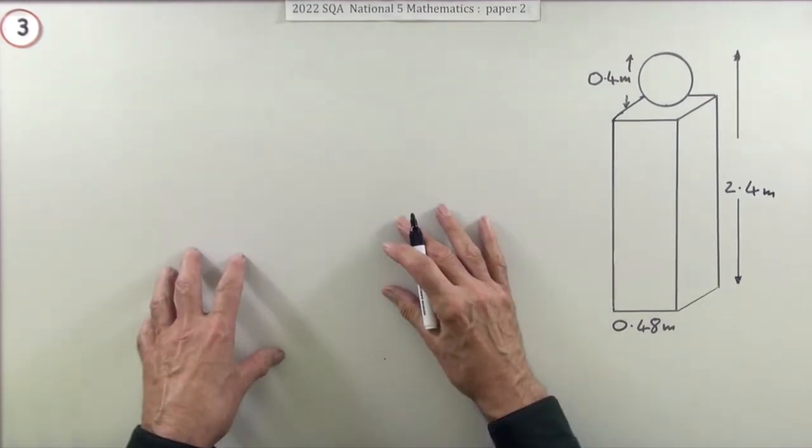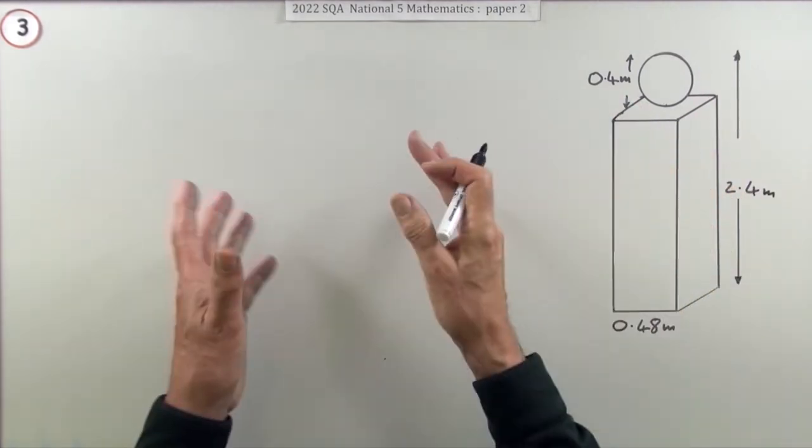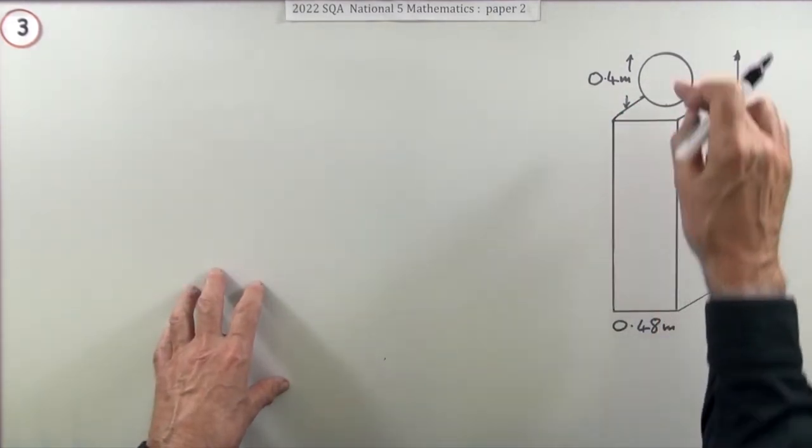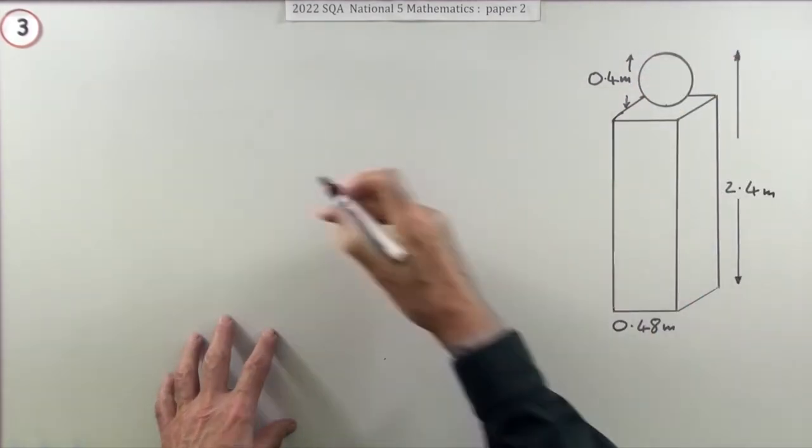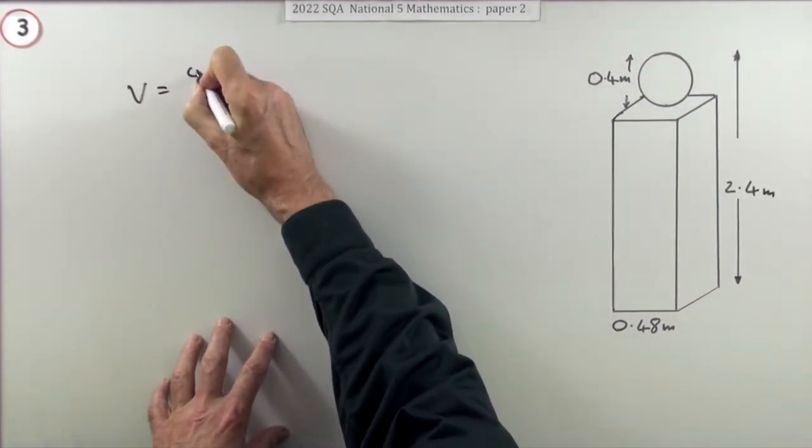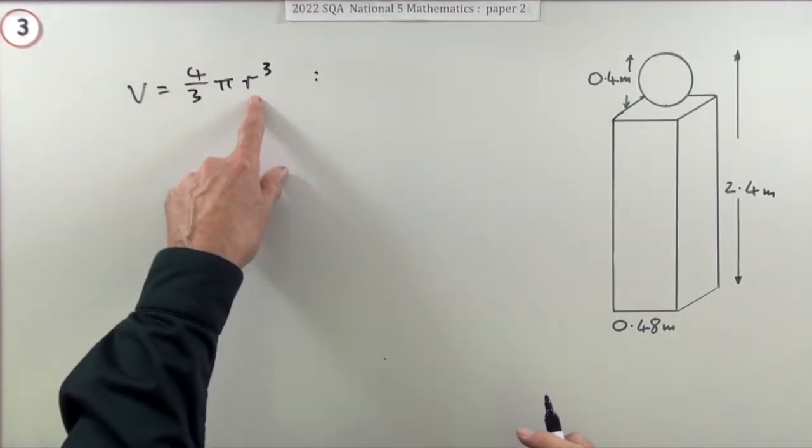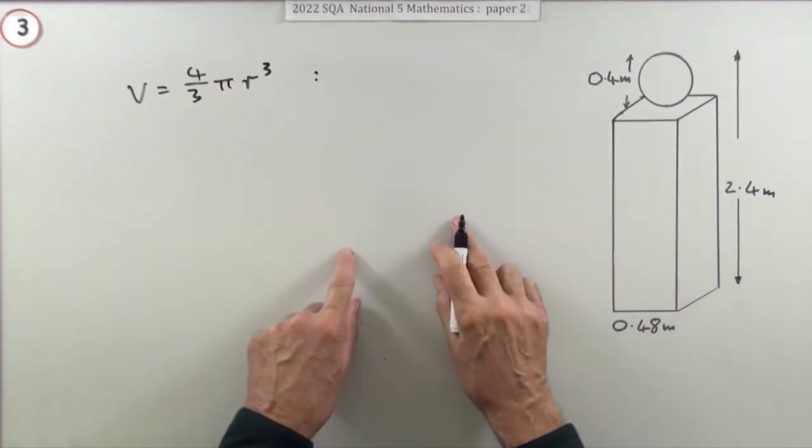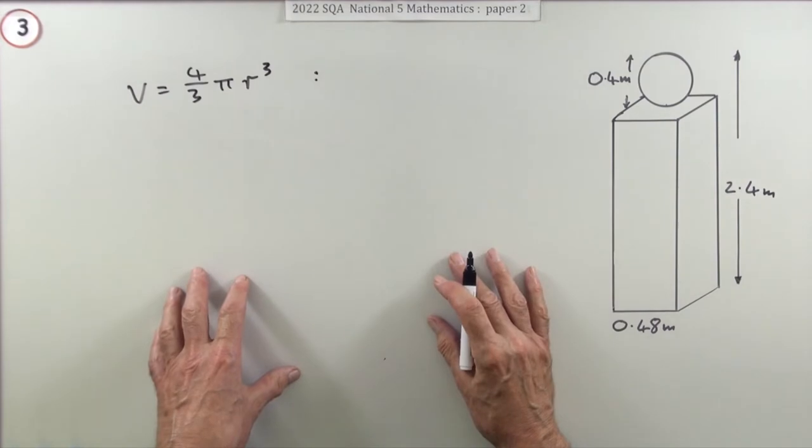Let's work out the answer. You've got a sphere to work out, a cuboid to work out, and you're going to add the two together because the sphere has been stuck on it. A sphere, that'll be 4/3 π r³.